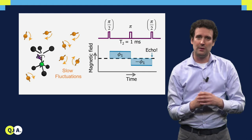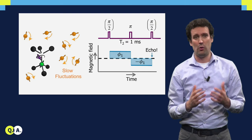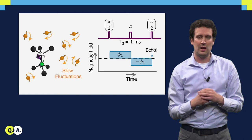But luckily we can play a trick. We can apply a pulse that inverts the state of the NV — that is, we flip it — and this also inverts the effect of the magnetic field on the spin. So if we have the same time before and after this flip, then the effect of the field exactly cancels and the quantum state is protected. We call this a spin echo.